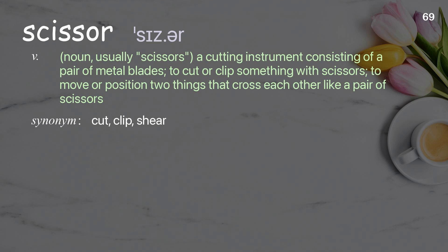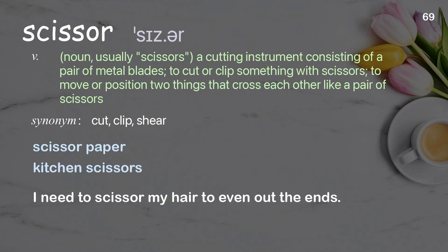Scissor: noun, usually scissors — a cutting instrument consisting of a pair of metal blades; to cut or clip something with scissors; to move or position two things that cross each other like a pair of scissors. Examples: scissor paper, kitchen scissors. I need to scissor my hair to even out the ends.